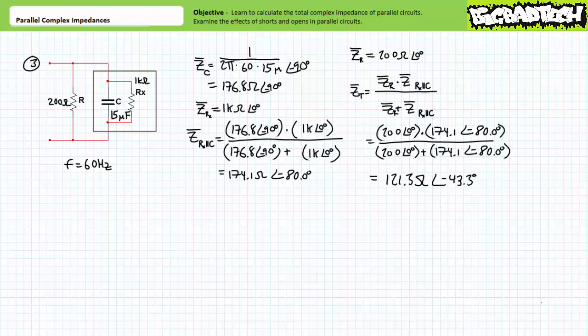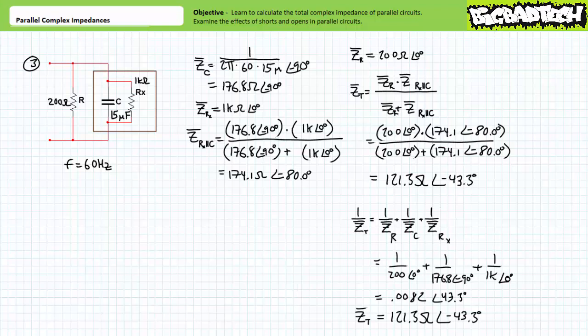The third example problem makes use of a non-ideal capacitor with only one kilo ohm of leakage resistance. With such a small leakage resistance path in parallel, this represents a poorly manufactured capacitor or one reaching the end of its lifespan. At this excitation frequency, the non-ideal capacitor is an impedance of roughly 174.1 ohms at an angle of negative 80 degrees. This non-ideal capacitor is in parallel with a 200 ohm resistor, which is an impedance of 200 ohms at zero degrees. Using the quick and dirty method, we arrive at 121.3 ohms at an angle of negative 43.3 degrees. One could also perform this in one step using the more involved method, treating the leakage resistor as yet another path in parallel, yielding the same result.